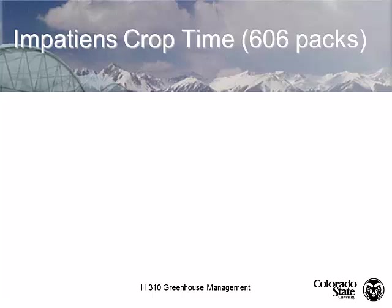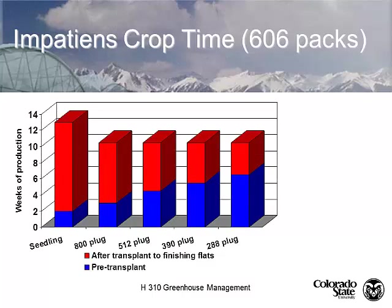This is all based on what's called a 606 pack. A 10-20 tray measures 11 by 21 inches—we call it a 10-20 because it's close to nominal. In a 606, we have six cell packs with six plants per cell pack, so 36 plants per tray. An 800 plug means there are 800 seedlings in that 10-20 plug tray—little bitty seedlings spending about three weeks in the tray.